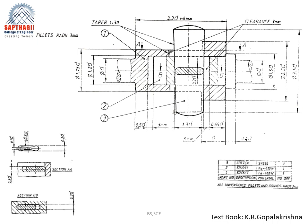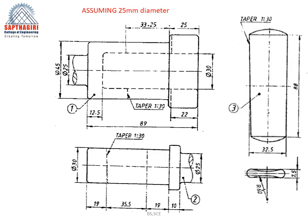We are considering proportionate dimensions for a particular diameter. The basic diameter can be given or assumed as 20 mm or 25 mm approximately. For diameter 25 mm, the proportionate dimensions of the three parts — spigot, cotter, and socket — are provided in this figure. Using this figure we are going to calculate and represent the cotter joint. This cotter contains a taper of 1 is to 30.